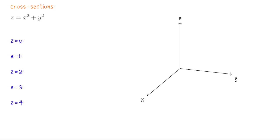We're going to start looking at quadric surfaces by examining the equation z equals x squared plus y squared. We can think of this as the function f of x and y equals x squared plus y squared, which makes it a scalar-valued function of two variables. We would like to graph this equation using the method of finding cross sections.